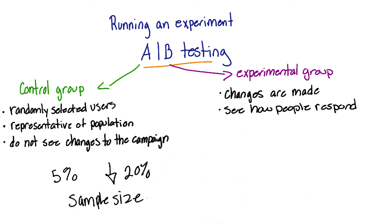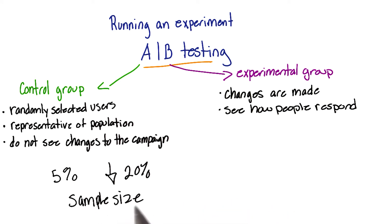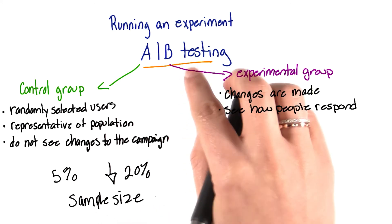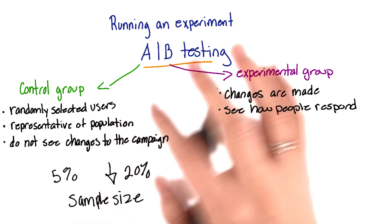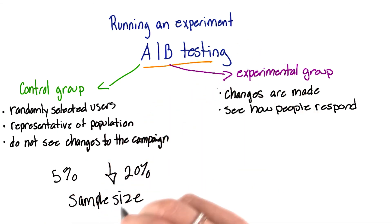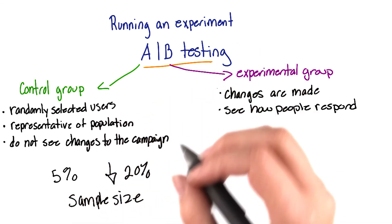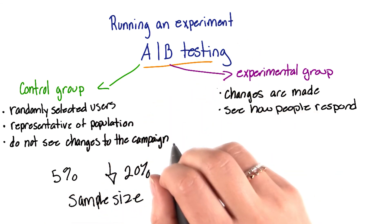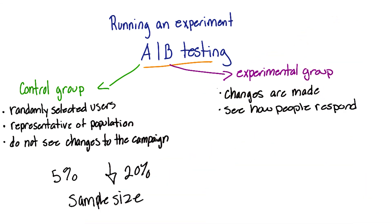To determine the best sample size for your experiment, there are a ton of free online sample size calculators you can check out. To run A-B tests, there are also a ton of different tools you can use. For example, Optimizely allows you to make changes on your website and will run and host the experiment for you.